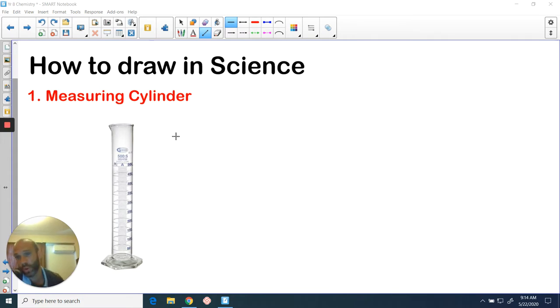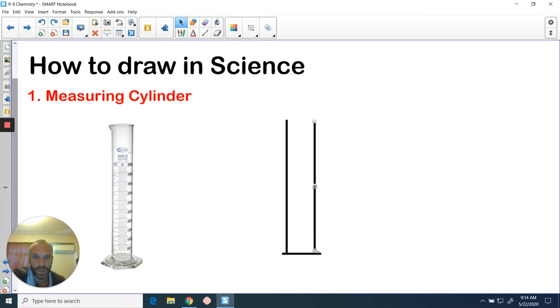Our first piece of equipment that we're going to look at is the measuring cylinder. Very straightforward, you're going to need to have two parallel lines like so, and one perpendicular line at the bottom. I'm going to tidy this up a little bit. I've got the advantage of not needing a ruler, I'm able to draw straight lines on the screen. You will need your ruler, and that's what a measuring cylinder looks like in science.